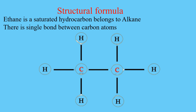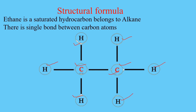To draw the structural formula, we will write the central atoms. Here, carbon atoms are the central atoms, and the other elements are arranged around them. Each carbon atom is surrounded by four atoms — one carbon atom is surrounded by three hydrogen atoms and one carbon atom, and the other carbon atom is also surrounded by three hydrogen atoms and one carbon atom. This is the structural formula.